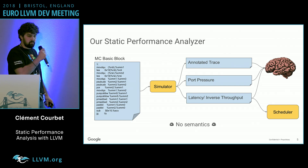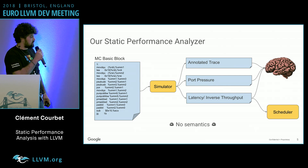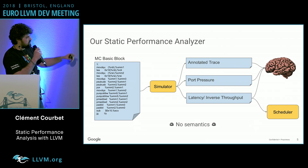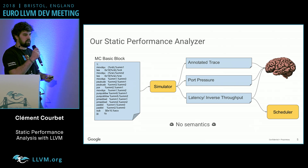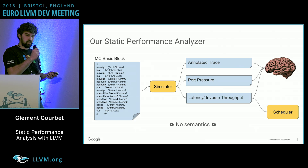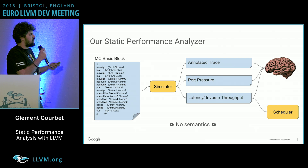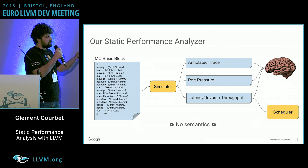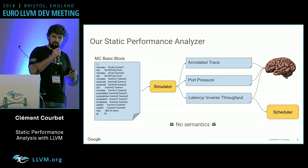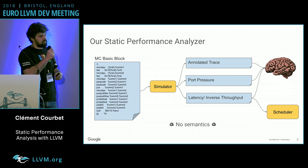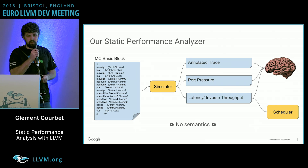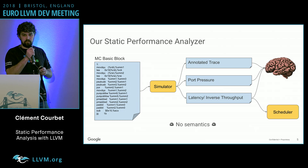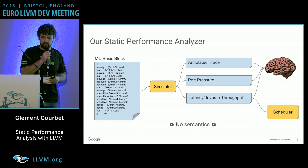So we have a static performance analyzer. Essentially, it takes a basic block of instructions, runs a simulator on it, and spits out an annotated trace, port pressure annotations, and computes the latency of your basic block. You can use that to feed to an engineer who will look at the code and come up with better code, or feed it to a machine scheduler to try to do that automatically.